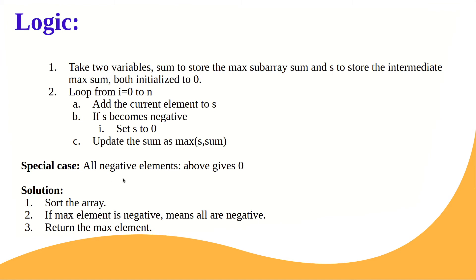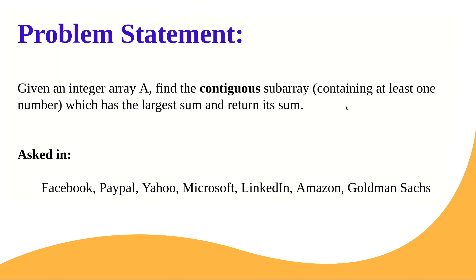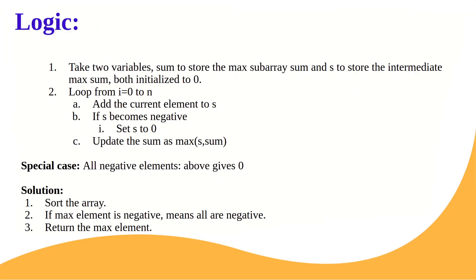There is one special case when all the numbers are negative. The problem says we need to find the contiguous subarray containing at least one number. So we cannot return zero — we need to take at least one number as output. The above logic would give us zero when all numbers are negative. So what we do is sort the array, and if the maximum element is negative then all are negative. In that case we return the maximum element among them, which is the least negative value.